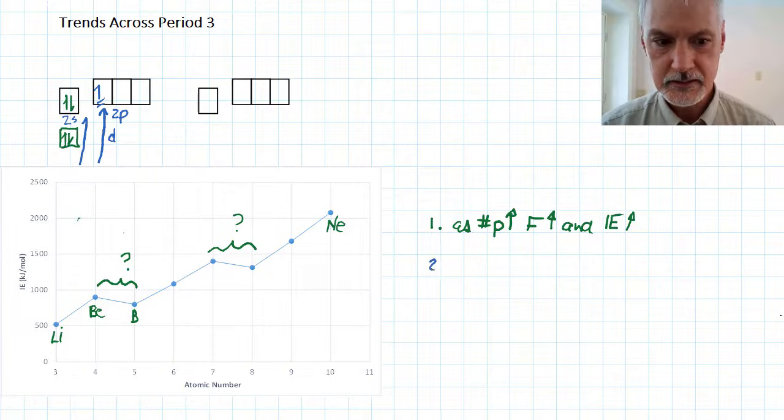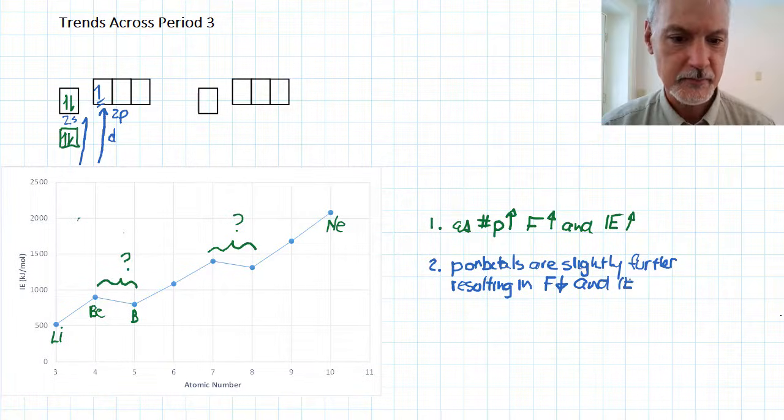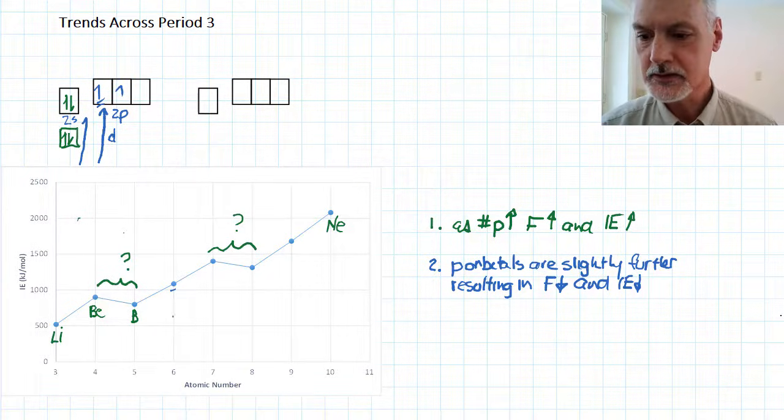So my second point here is that p orbitals are slightly further away, resulting in a weakening of the force. So our force of attraction actually goes down a bit, and as a result, the ionization energy goes down a bit. Now as we continue to add more electrons, then once again we get greater attraction from the nucleus, and we start the back swing, back up the trend.